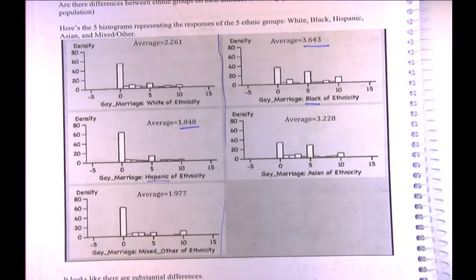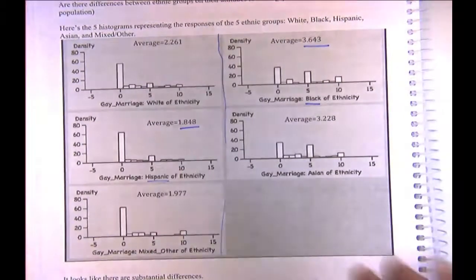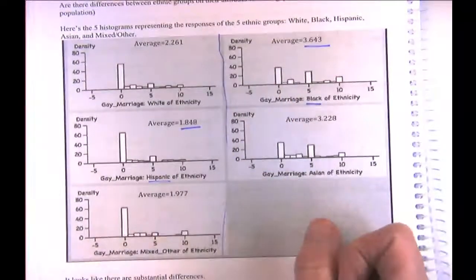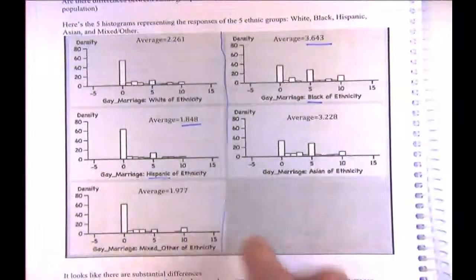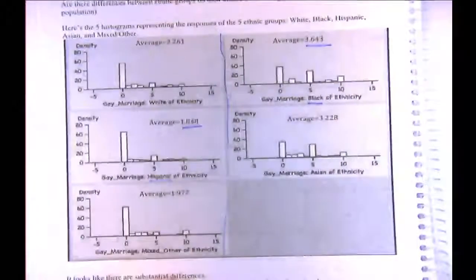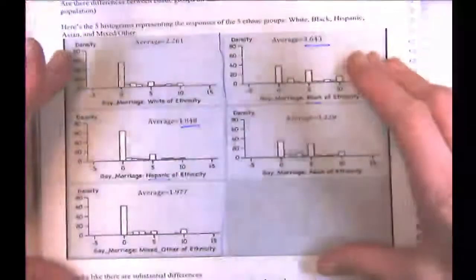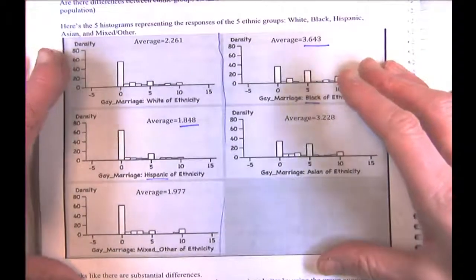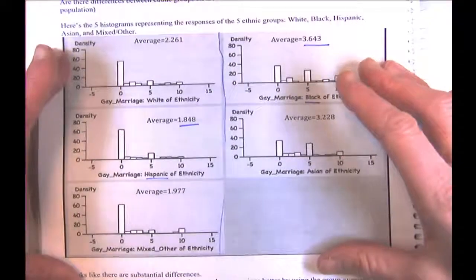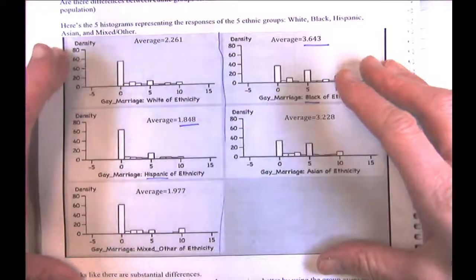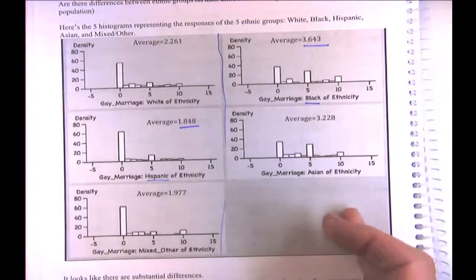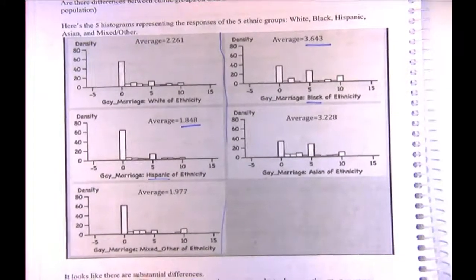The question is: how do we assess these differences? We could do separate two-sample Z or T tests on all of them, but we want to first test the overall effect — to see if there's any advantage to predicting someone's attitude based on their ethnicity versus using the overall group average.